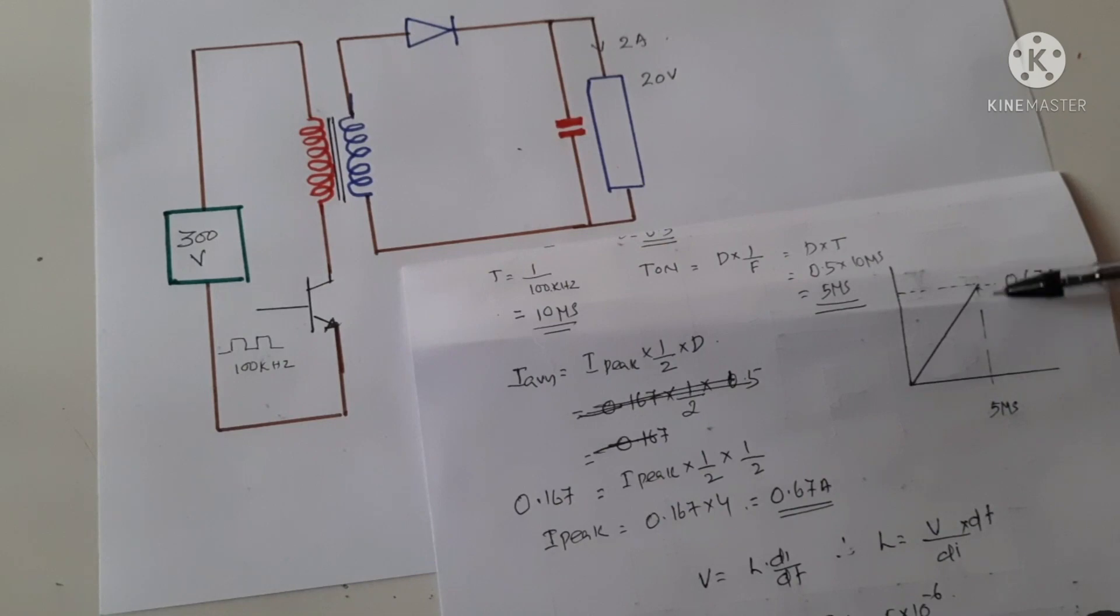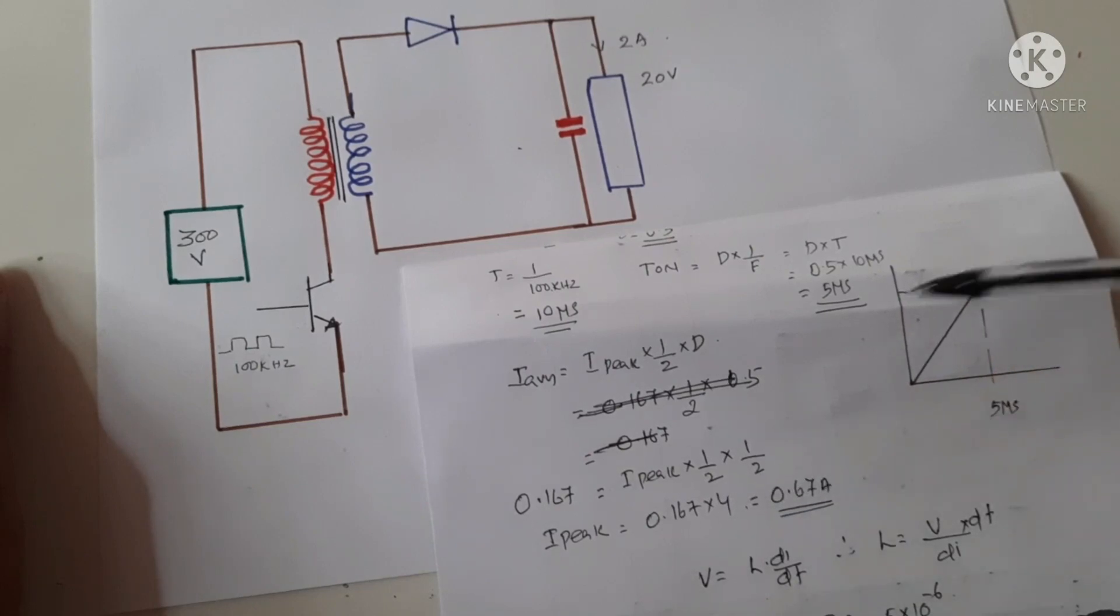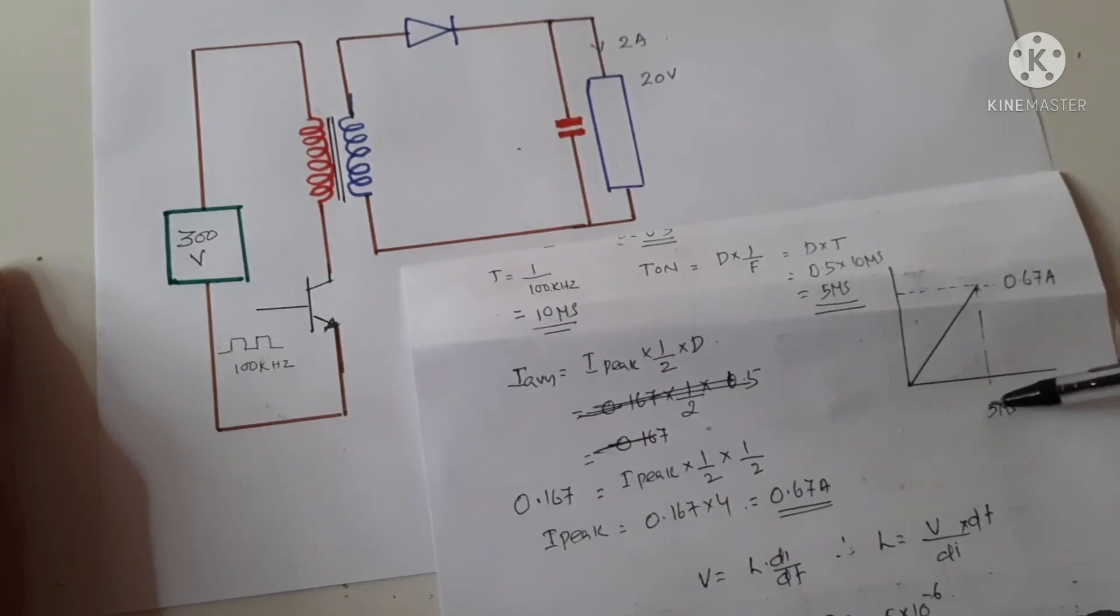as this is a triangle, the formula will be half into the duty cycle. Here the duty cycle is 0.5, that is also half. So 0.67 amperes, this is the maximum value that the current is reaching when it is on for 5 microseconds.